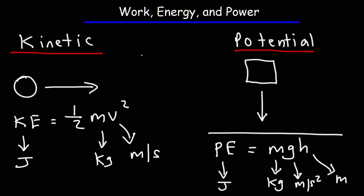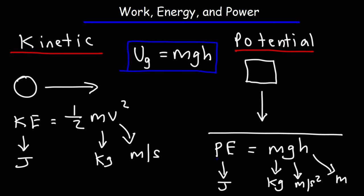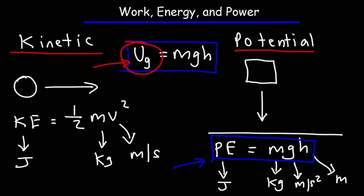Some textbooks use U for potential energy, with a subscript G indicating gravitational potential energy. Sometimes PE is used as well. Just be aware you might see these two variables for potential energy. It's better to use the subscript notation because there are different types: gravitational potential energy, elastic potential energy when dealing with springs, electric potential energy, and chemical potential energy. This notation is useful when distinguishing between the different types of energy.